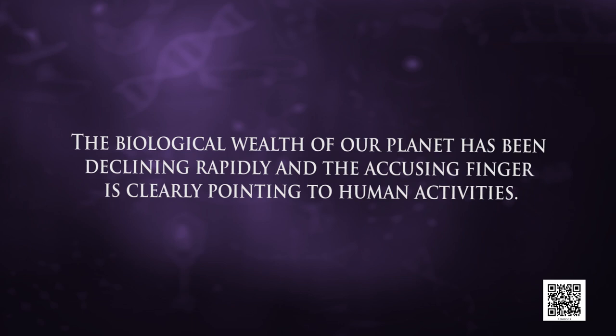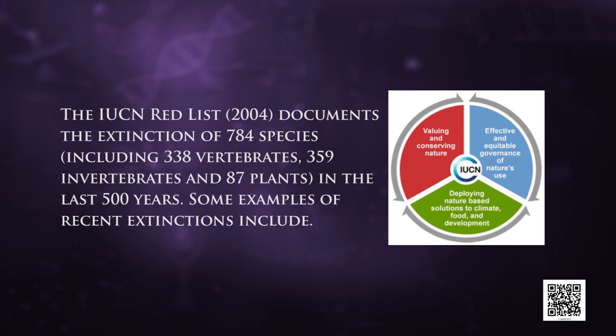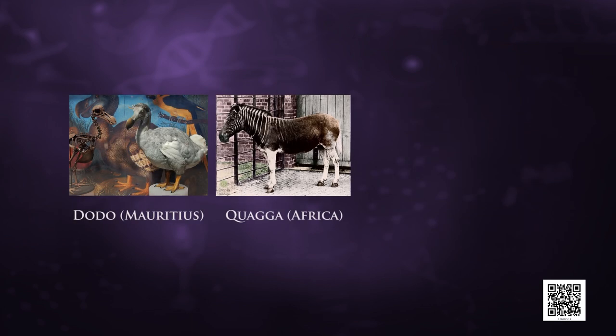The biological wealth of our planet has been declining rapidly, and the accusing finger is clearly pointing to human activities. The colonization of tropical Pacific islands by humans is said to have led to the extinction of more than 2,000 species of native birds. The IUCN Red List of 2004 documents the extinction of 784 species — including 338 vertebrates, 359 invertebrates, and 87 plants — in the last 500 years. Recent extinctions include the dodo, quagga, Steller's sea cow, and three subspecies — Bali, Javan, and Caspian — of tiger. The last 20 years alone have witnessed the disappearance of 27 species.